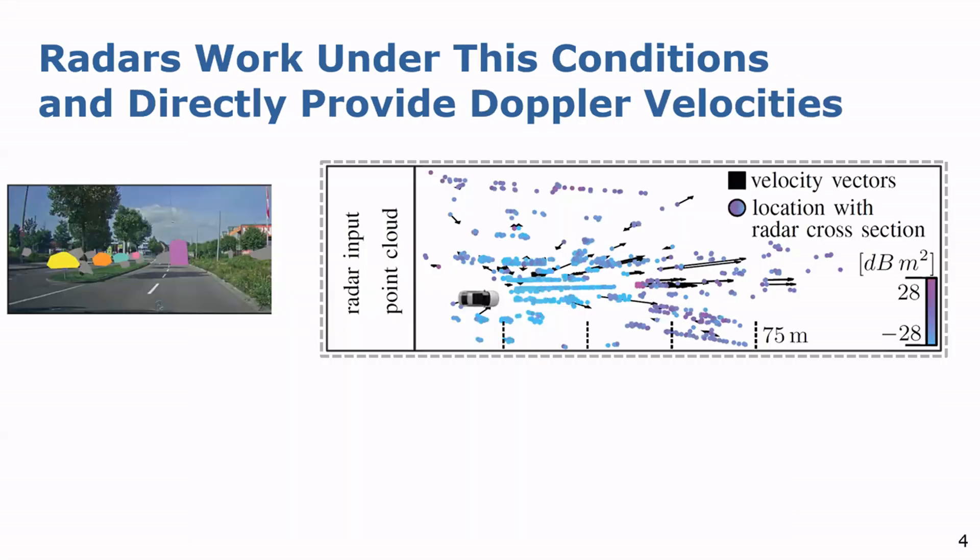Furthermore, radar sensors also directly provide the Doppler velocity, which is an important information for tracking.